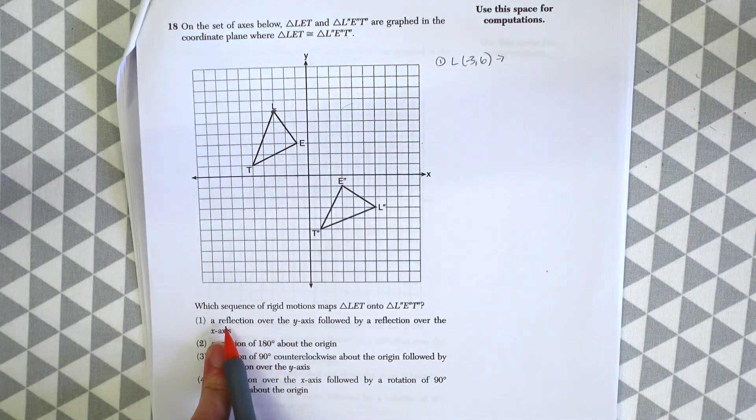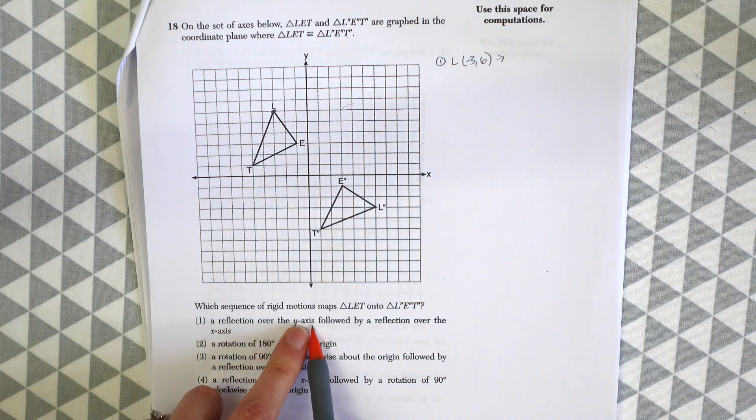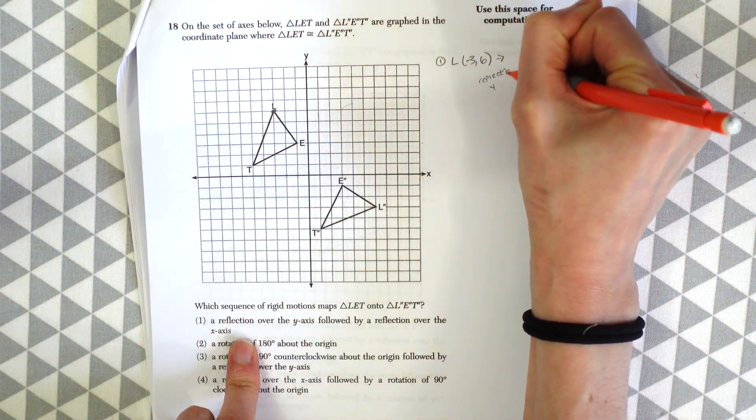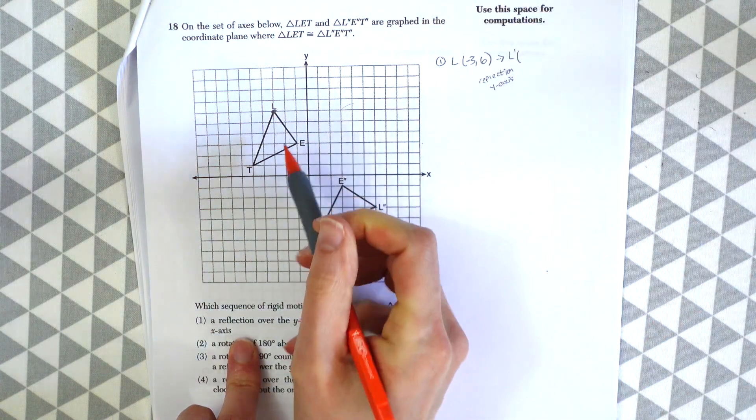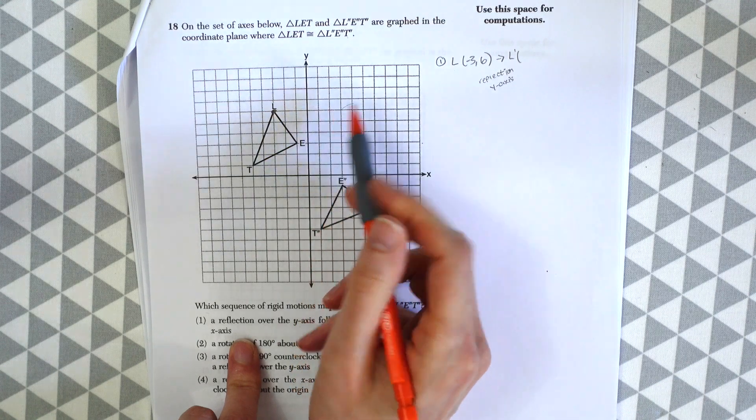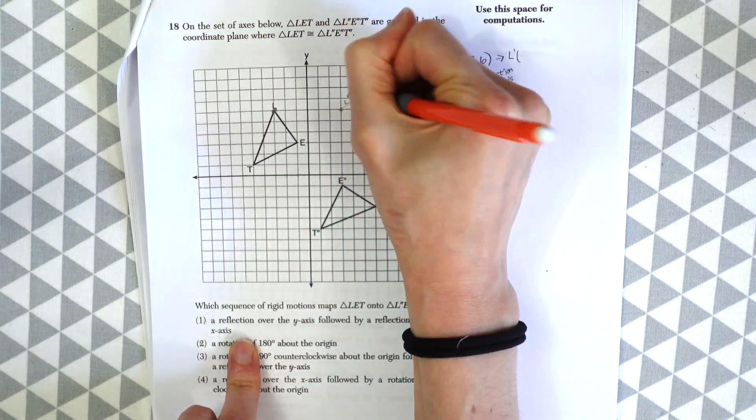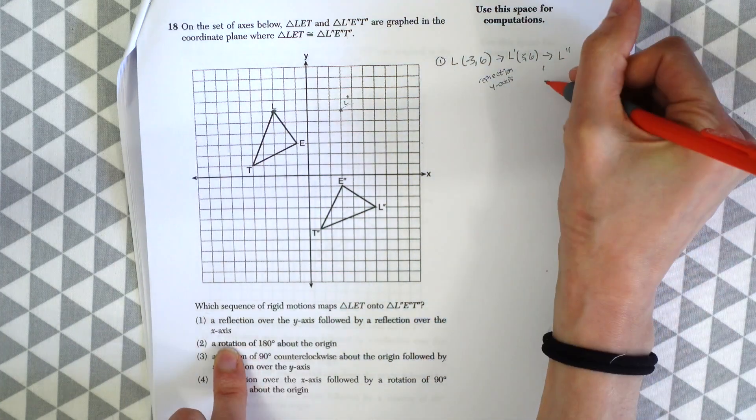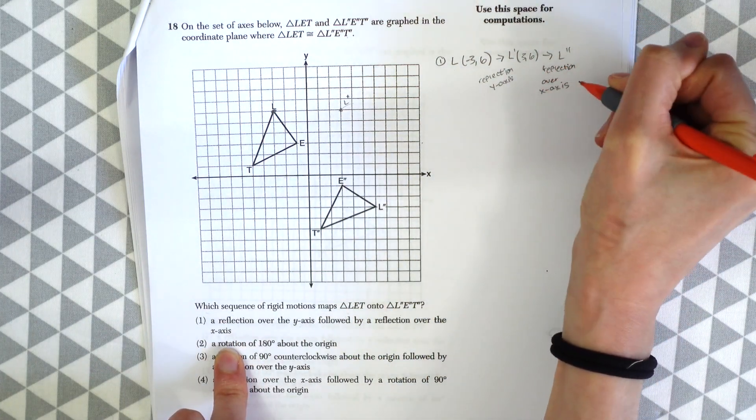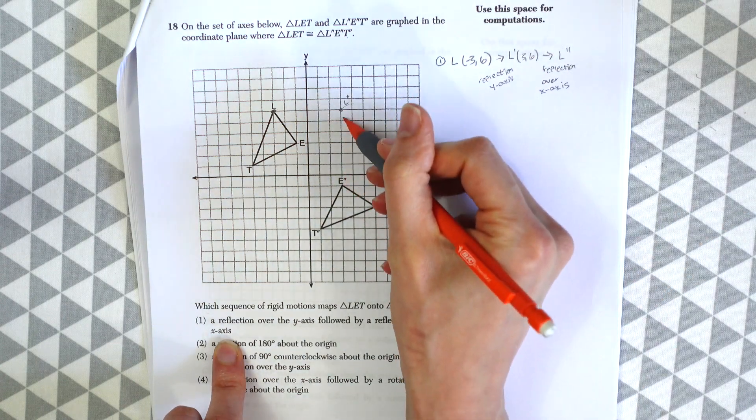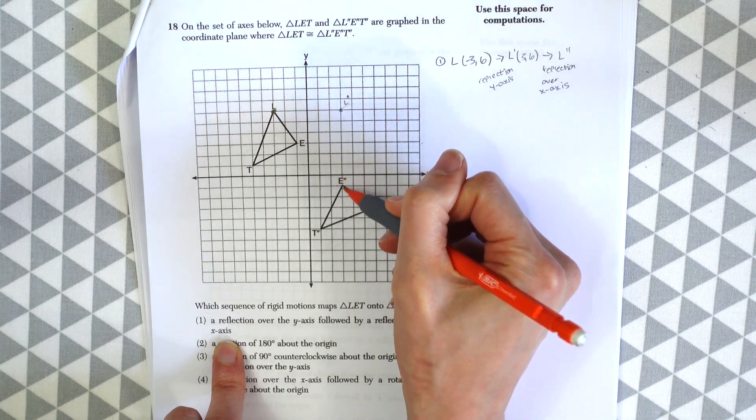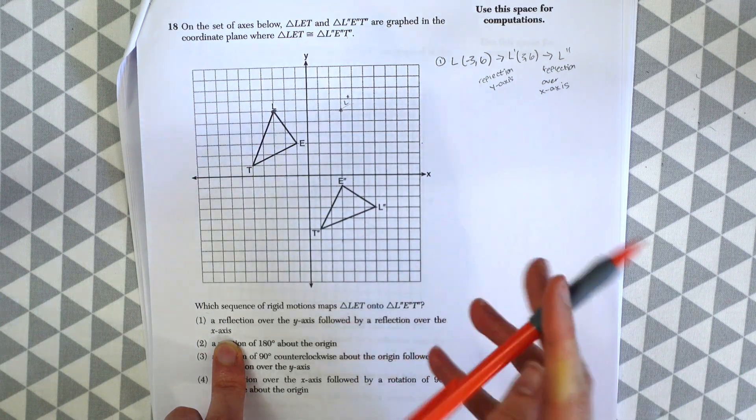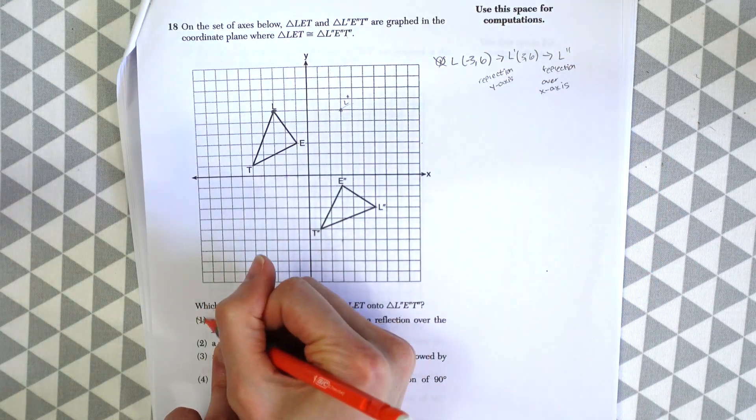So if we look at our first answer choice, they're saying was it a reflection over the y-axis, followed by reflection over the x-axis. So if we find reflection in the y-axis first. So this over y would be over here, which has the value of 3, 6. And then they're saying a reflection over the x-axis, which now would be all the way down here on the other side. So this is six units away. So then six units away on the other side would be down here. So you can see that L double prime is not down here. So this is not going to be our answer. Choice one is not the answer.